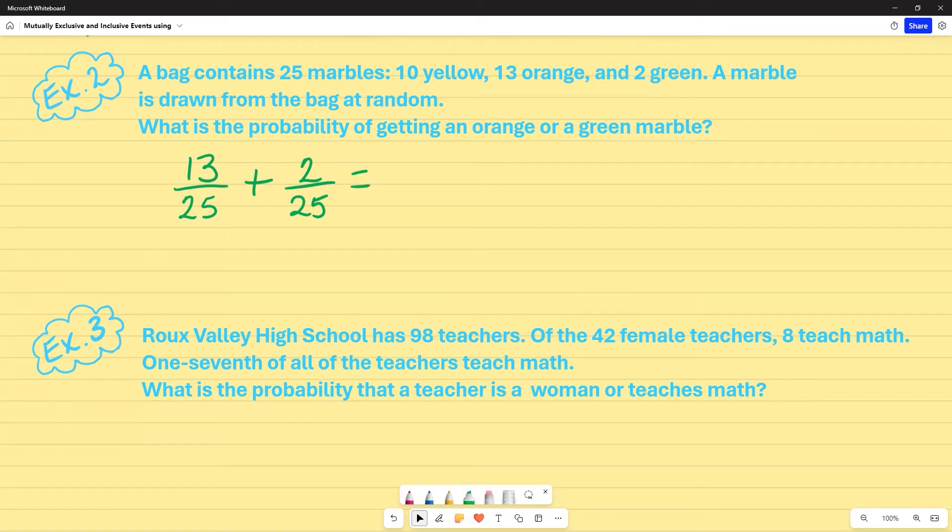So again, this is a mutually exclusive event because I can't pick both an orange and a green at the same time. So therefore this is the addition rule and I don't have to subtract anything out. I just go ahead and simplify it. And that's going to reduce to three over five, because I can divide that 15 over 25 by five.